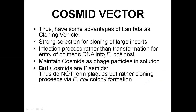Cosmids have the selective advantage of Lambda as a cloning vehicle: strong selection for cloning of large inserts, and infection rather than transformation for entry of chimeric DNA into the E. coli host. Cosmids maintain as phage particles in solution, but cosmids are plasmids — thus they do not form plaques. When bacteriophage infects the bacterial colony, they normally form clearing zones called plaques, but with cosmids, cloning proceeds via E. coli colony formation instead.